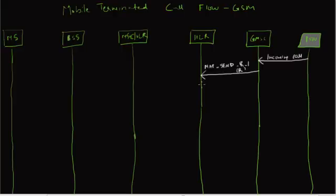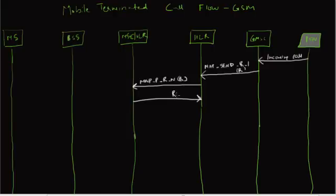The HLR, knowing it is a subscriber database and knowing where the mobile is currently visiting — which MSC VLR the mobile is at — sends a MAP Provide Roaming Number request to the mobile's current MSC VLR. This comes back with a response, and the HLR forwards that MSRN response to the gateway MSC as the MAP Send Routing Info response message.